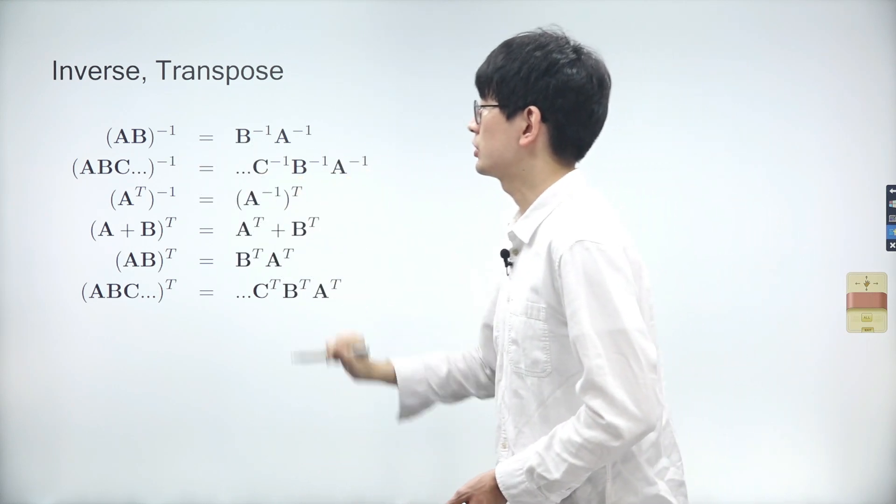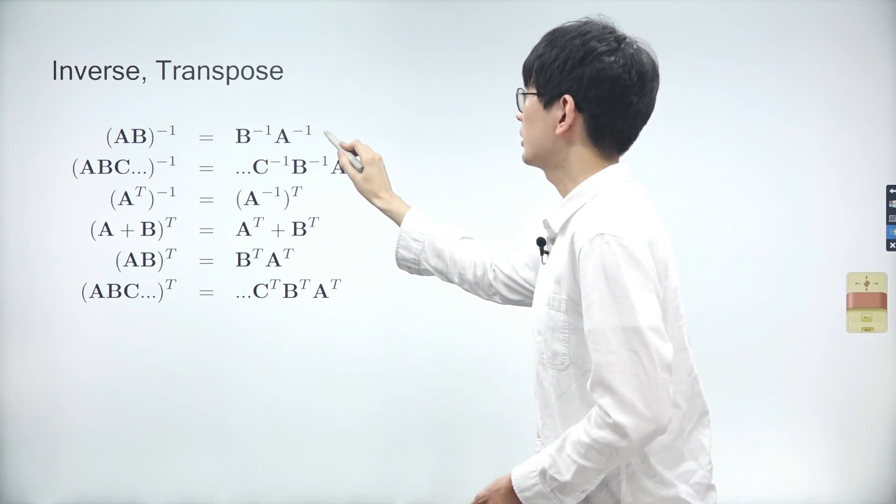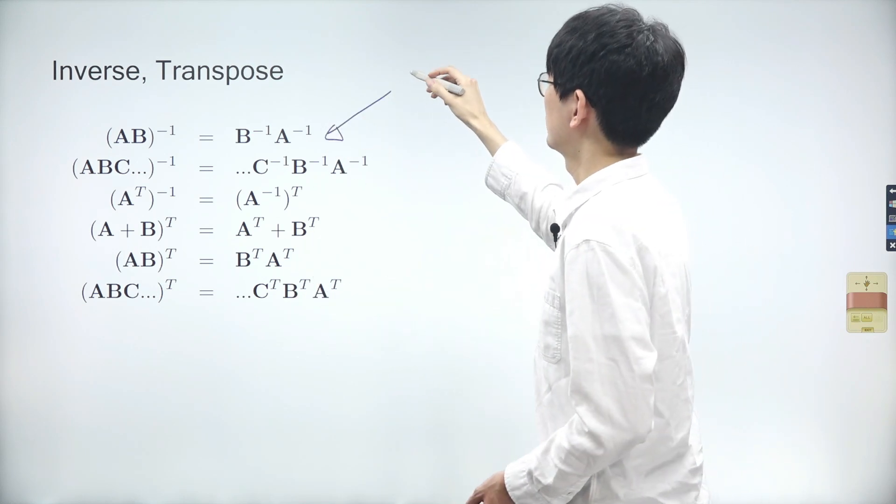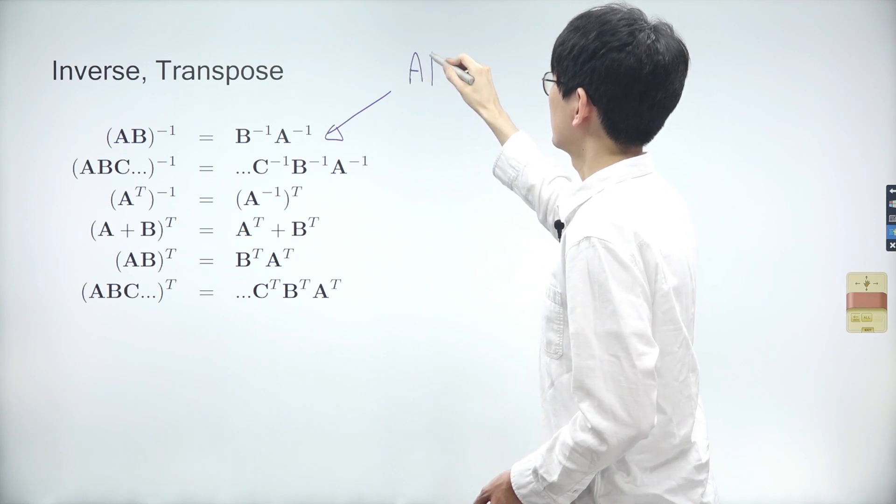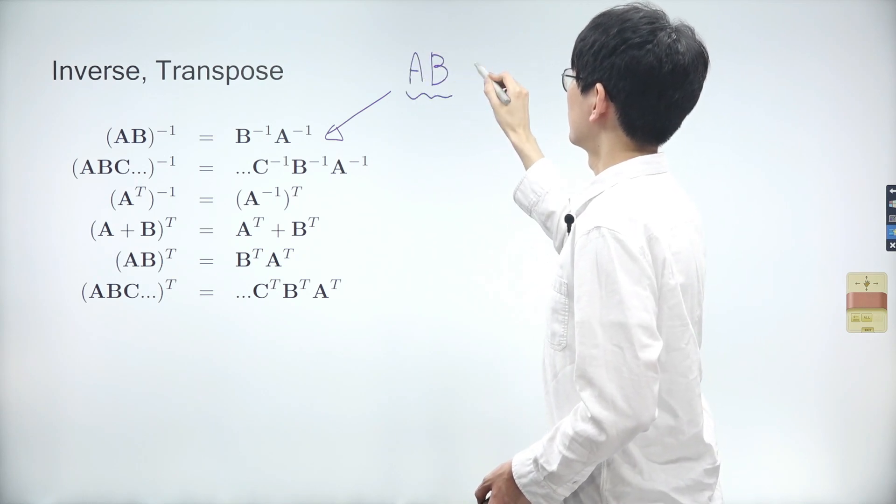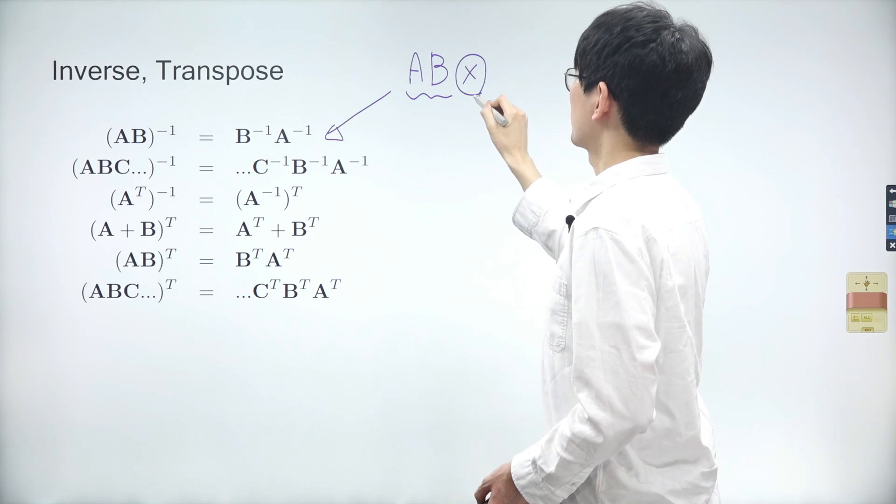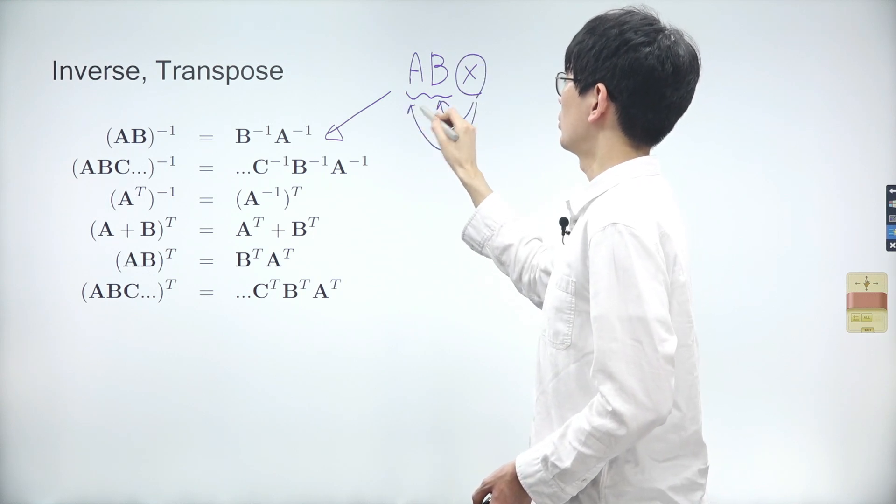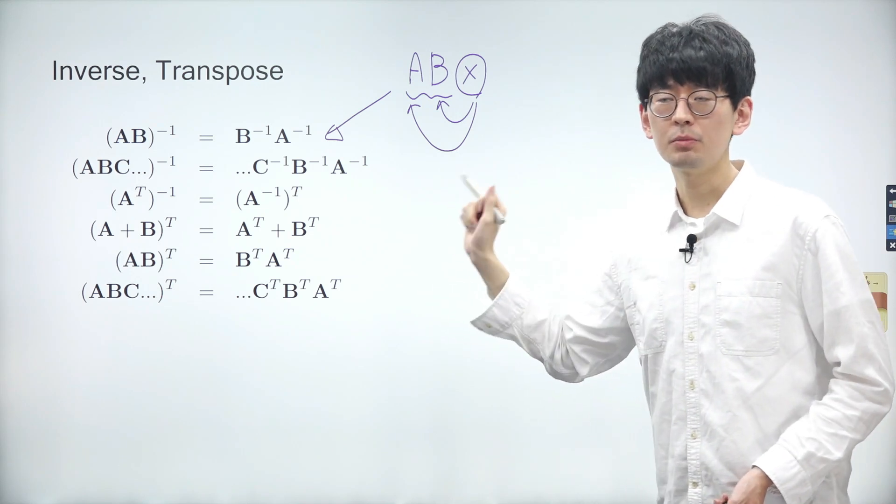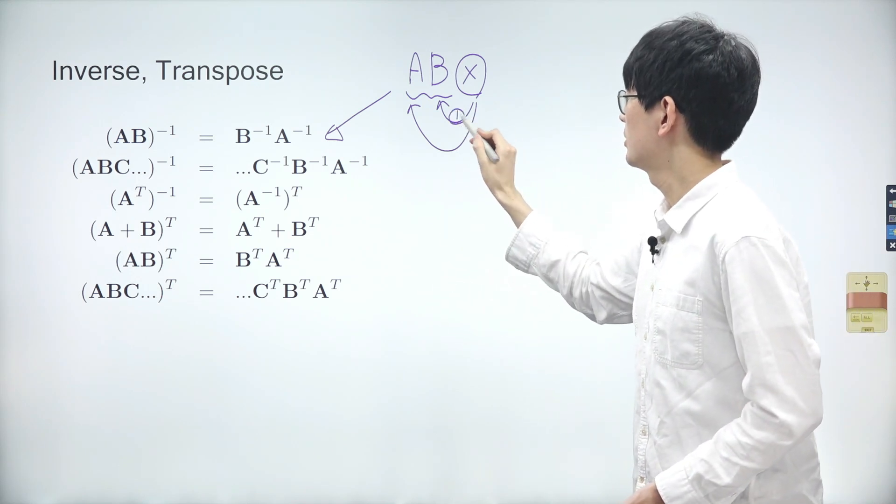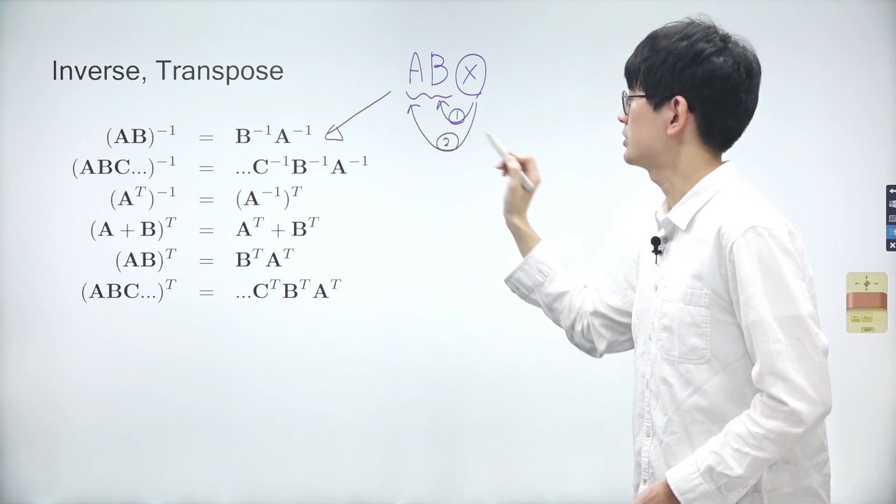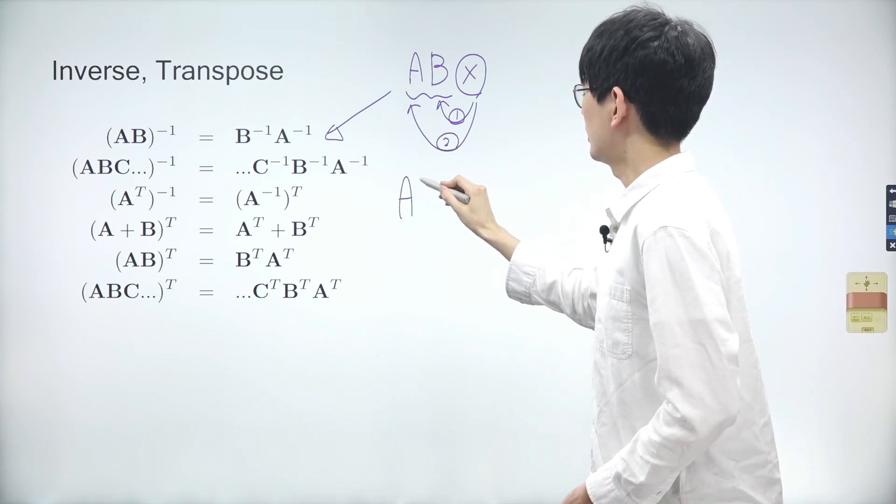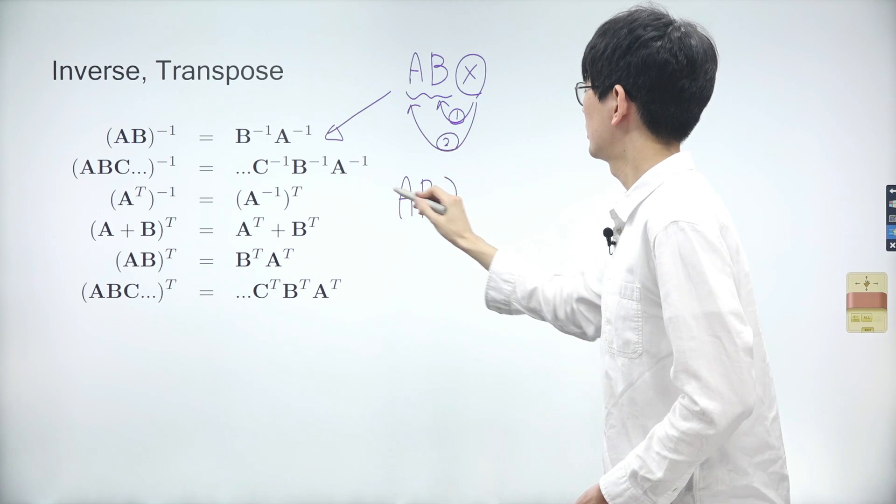We have a multiplication of two inverse matrices. Let's explore what it geometrically means to multiply two inverse matrices. First of all, what is AB? Suppose we have a vector X. The coordinates of vector X are first transformed by matrix B, and then by matrix A. Thus, B is the first matrix transforming X, and A is the second.